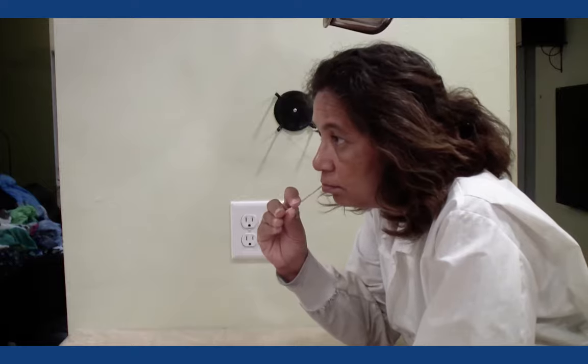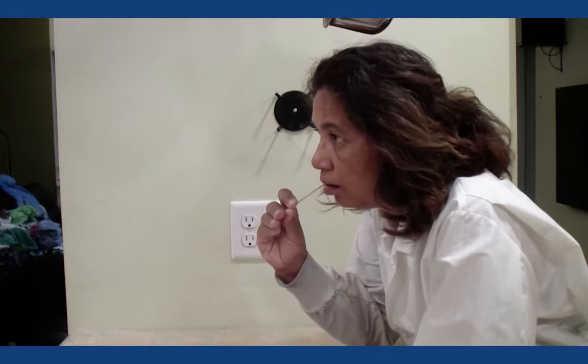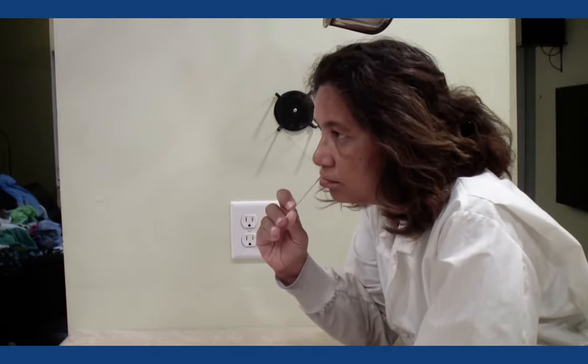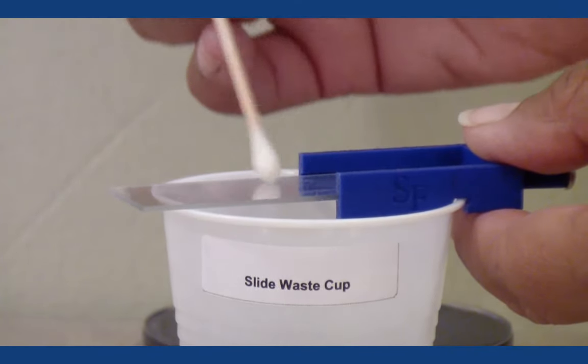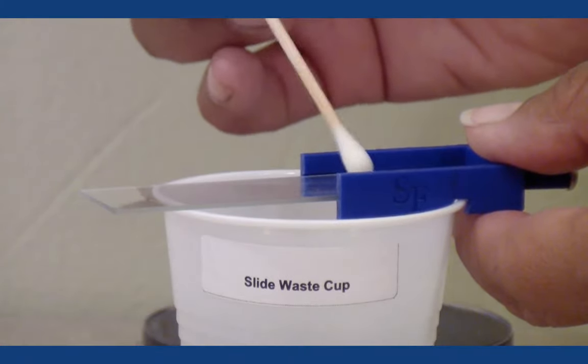You will use the same cotton swab to take a sample from your cheek and to spread on MSAT. Put the cotton swab in your mouth and rub the inside of your cheek, picking up some saliva in the process. Rub the cotton swab over the center of the glass slide.